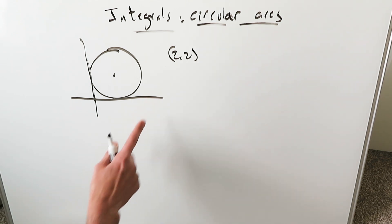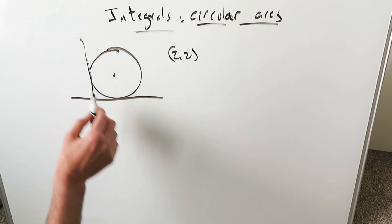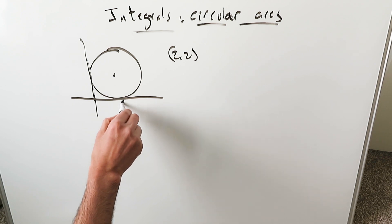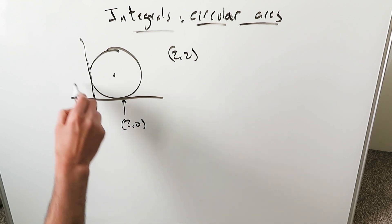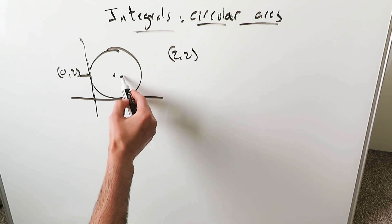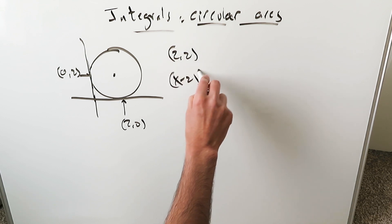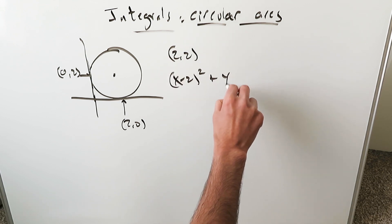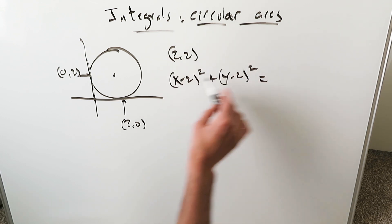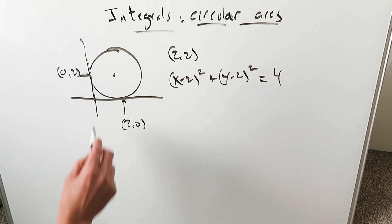This here just represents an example. A circle tangent to the x-axis and y-axis at the points 2 comma 0 and 0 comma 2. The center of that circle is 2 comma 2. The formula for this circle would be x minus 2 whole square plus y minus 2 whole square equals 4. The radius here is 2.